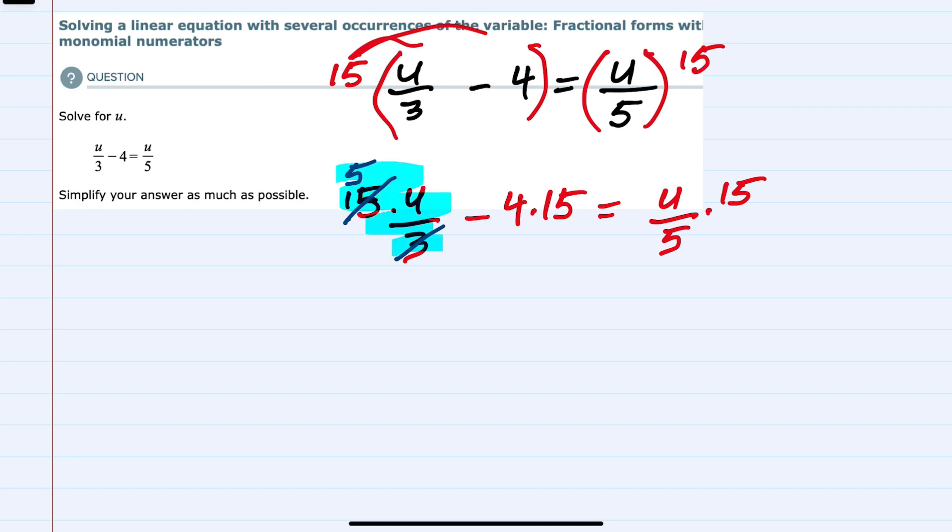This expression simplifies to just 5u, since we've canceled the 3. The second expression here, 4 times 15, we can just multiply that as 60. On the right hand side, I can also cancel this denominator. 5 goes into 5 once, 5 goes into 15 three times. So that's just 3 times u, or 3u.